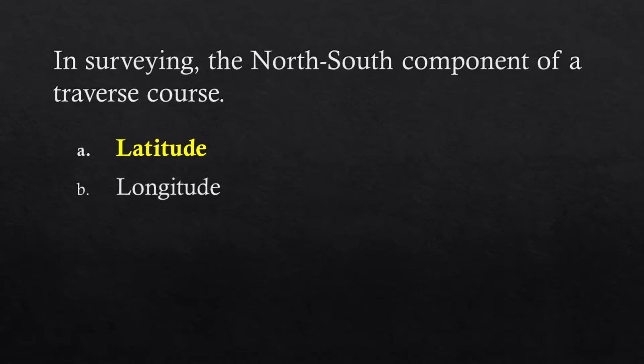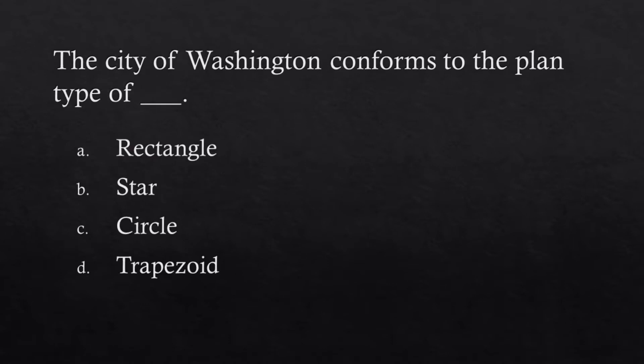The city of Washington conforms to the plan type of: a. Rectangle, b. Star, c. Circle, d. Trapezoid. Answer: Star.